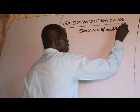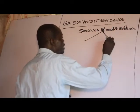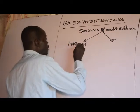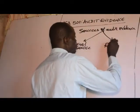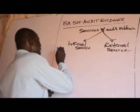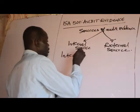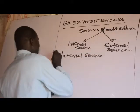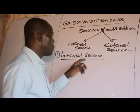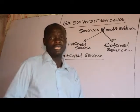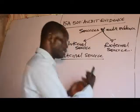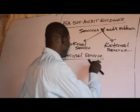I am going to categorize the sources of Audit Evidence into two. Number one, we have the internal source, and we also have the external source of Audit Evidence. Internal source of Audit Evidence are the audit evidence obtained by the auditor within the same organization — those audit evidence obtained by the auditor in the company he audits.